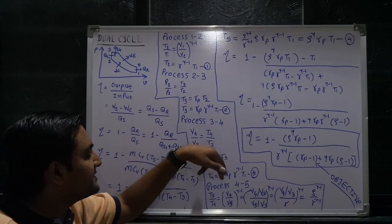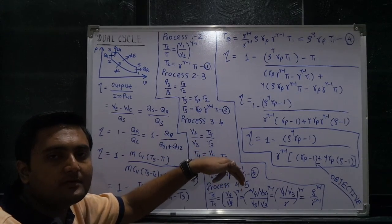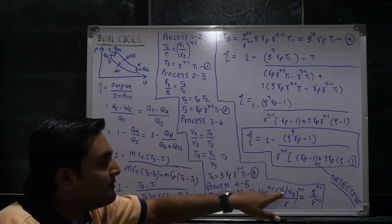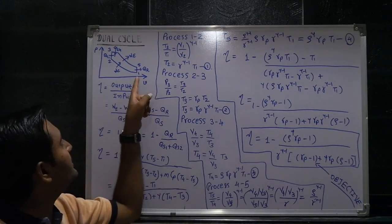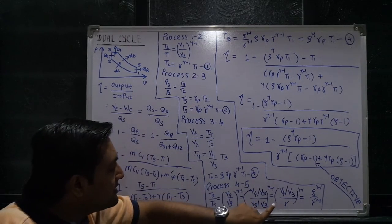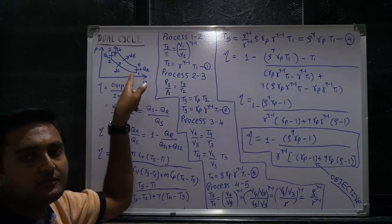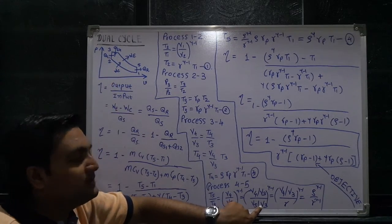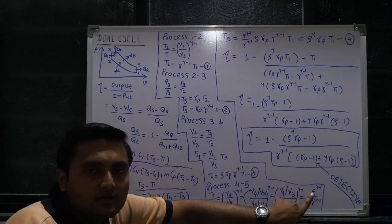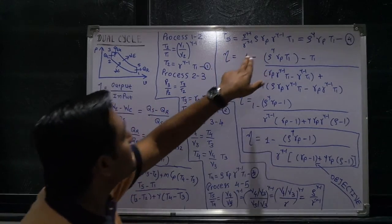For process 4 to 5 (isentropic): T5/T4 = (V4/V5) raised to gamma minus 1. Dividing numerator and denominator by V3: V4/V3 is the cutoff ratio rho, and V5 equals V1 (constant volume process), V3 equals V2. So V1/V2 is the compression ratio r. The expression becomes (cutoff ratio divided by compression ratio) raised to gamma minus 1. After evaluation, T5 in terms of T1 is rho raised to gamma times rp times T1.